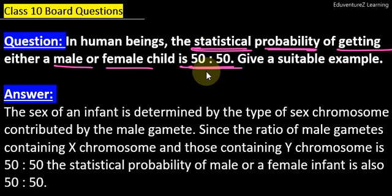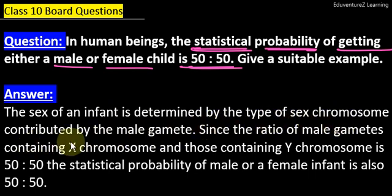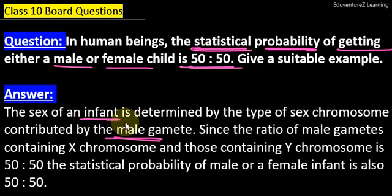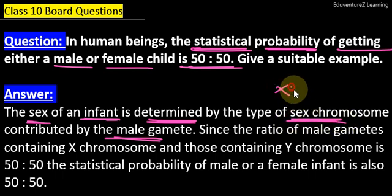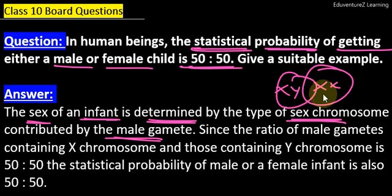The answer to this question is: the sex of an infant is determined by the type of sex chromosome contributed by the male gamete. The sex of the infant — the new baby's gender — is determined by the male gamete.